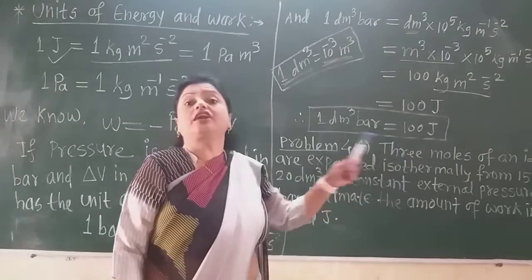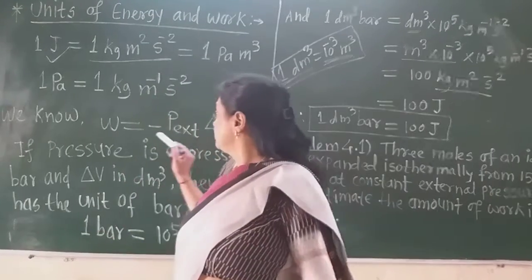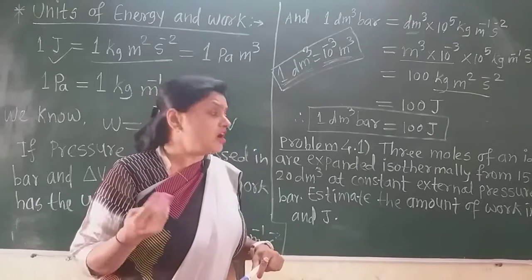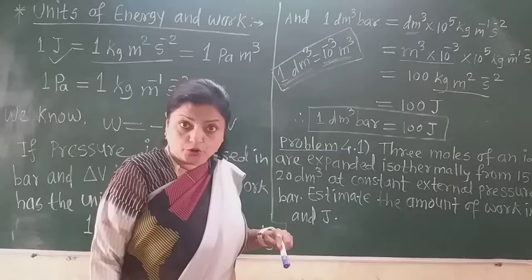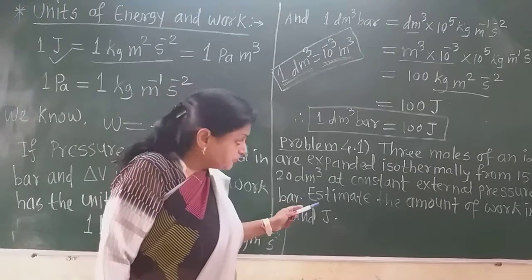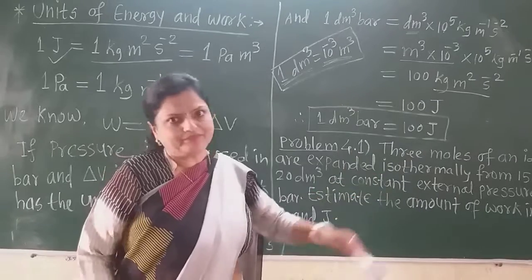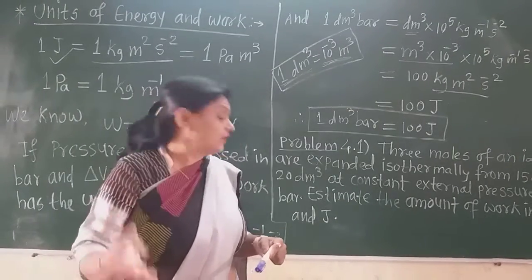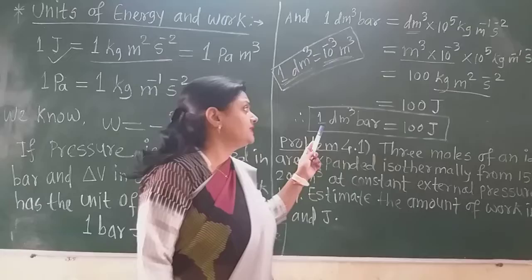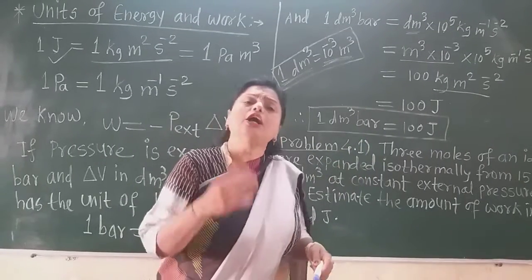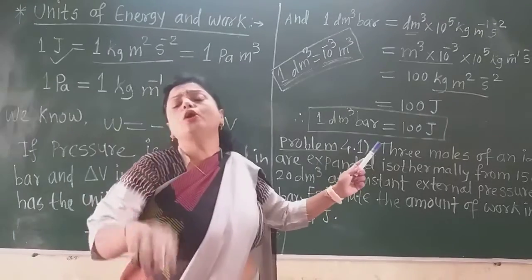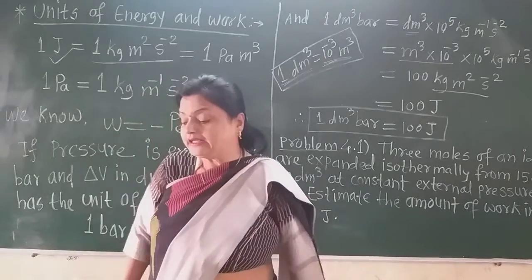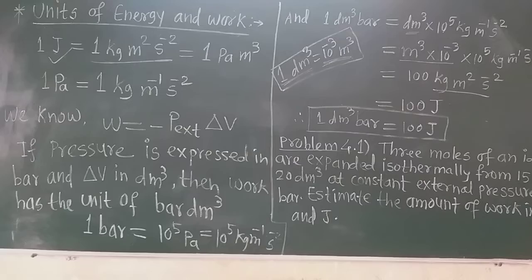The constant external pressure P_ext is given as 1.2 bar. We will obtain the work in bar times decimeter cube and then convert it to Joules. Since 1 decimeter cube bar equals 100 Joules, we simply multiply the result by 100 to get the answer in Joules. Let us now solve this problem.